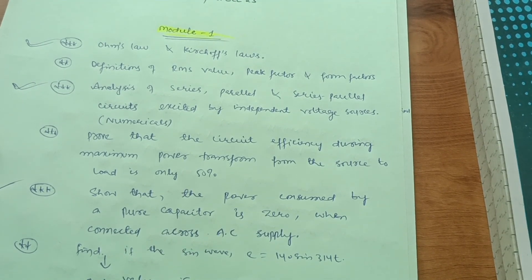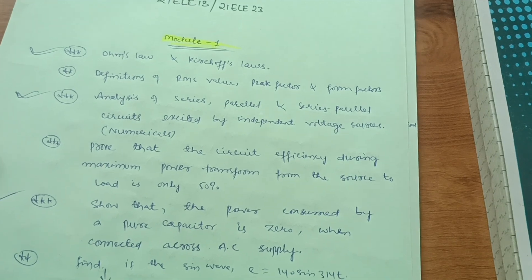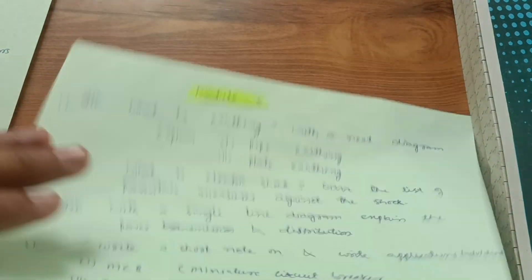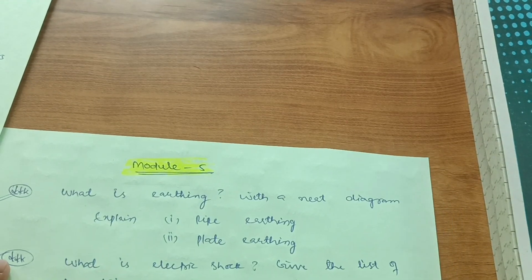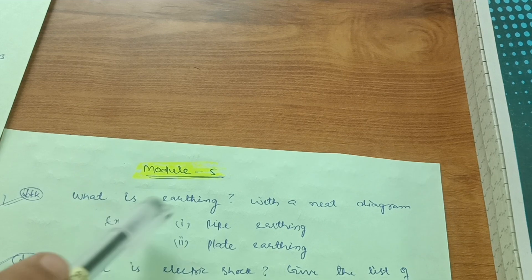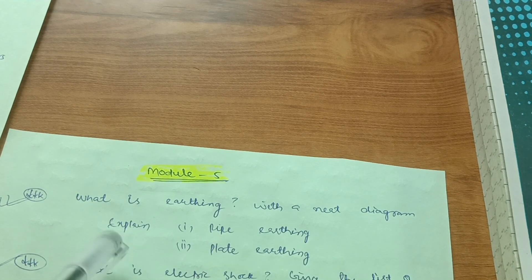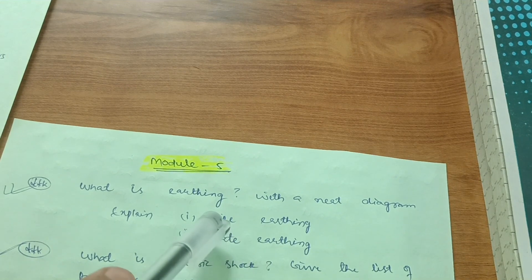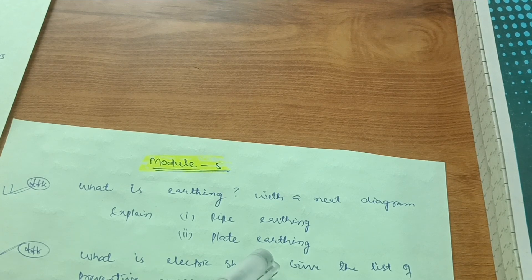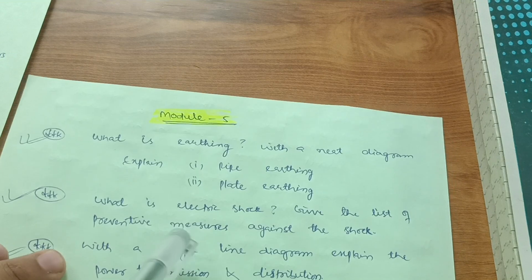Module 5 is also a passing module — it is a theoretical module. Important questions include: What is earthing? With a neat diagram, explain pipe earthing and plate earthing. Sometimes they give only pipe earthing and sometimes only plate earthing, so you have to focus on both. They cannot give both together, but be prepared for either.